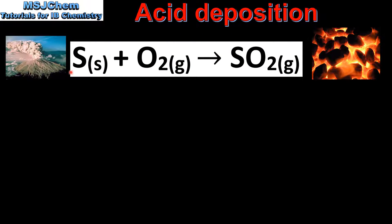Next we look at the equations for the formation of sulfuric acid. In this equation, sulfur reacts with oxygen to form sulfur dioxide. A natural source of this is volcanoes, and a manmade source is the combustion of coal that contains sulfur.